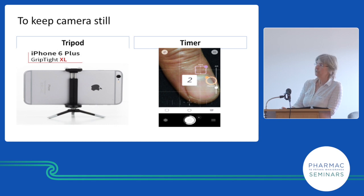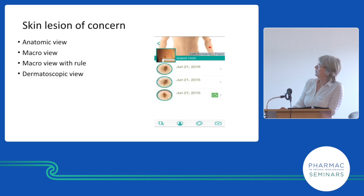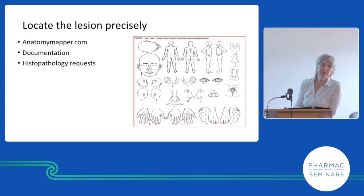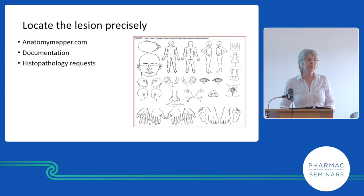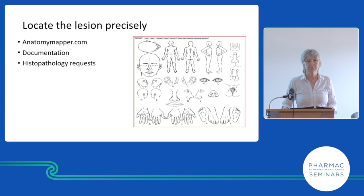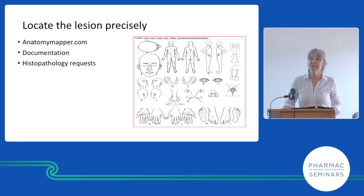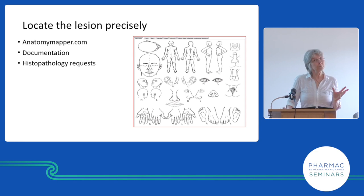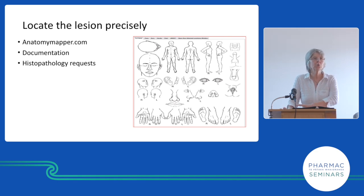These are different types of tripods you can buy to fit phones on, or a timer. Anatomic macro, macro of the ruler, and dermoscopic views. Location — we get pictures of moles on back labelled 'please see mole on back,' and then we get a picture of all the moles. How am I to know which one is the one of concern, especially if you've sent three moles on back? Which one is which? That's really difficult and sometimes very important, because it may be only one of those three that matters, and yet all the pictures have been muddled up.